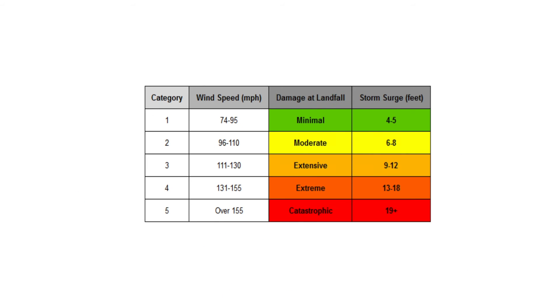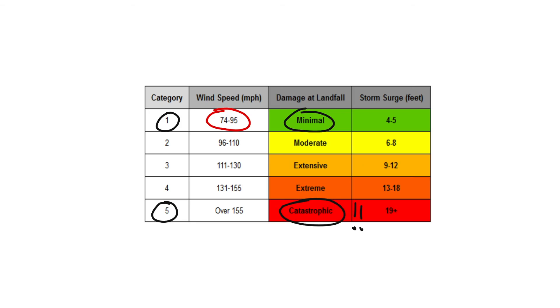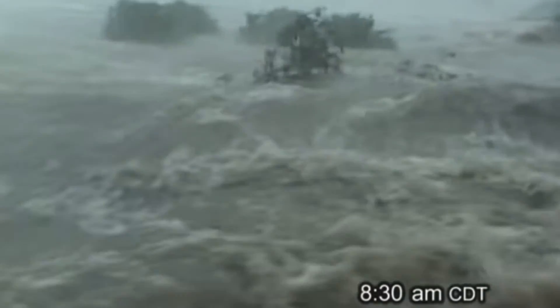Hurricanes are classified into different categories, with category 1 bringing minimal damage and category 5 bringing catastrophic damage. Hurricanes can also cause storm surges and excessive rainfall, which leads to flooding.